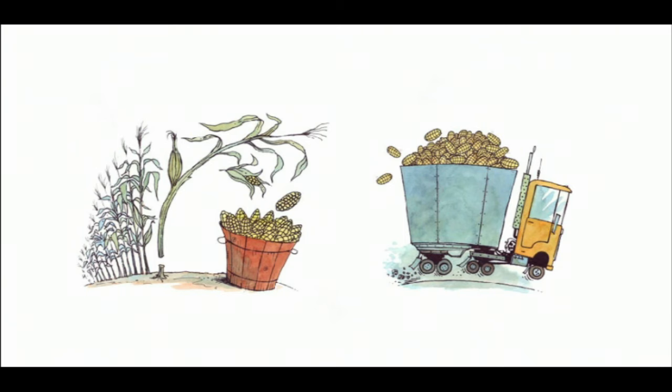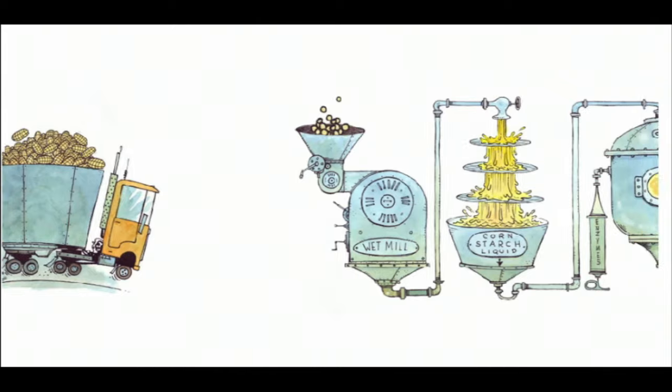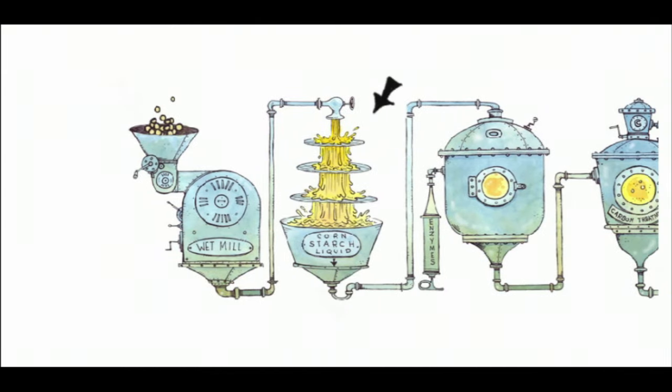To make high fructose corn syrup, the corn is first harvested and sent to the wet mill. Next, the corn is crushed in a mill and then run through screens in order to separate the corn starch from the other parts of the kernel.